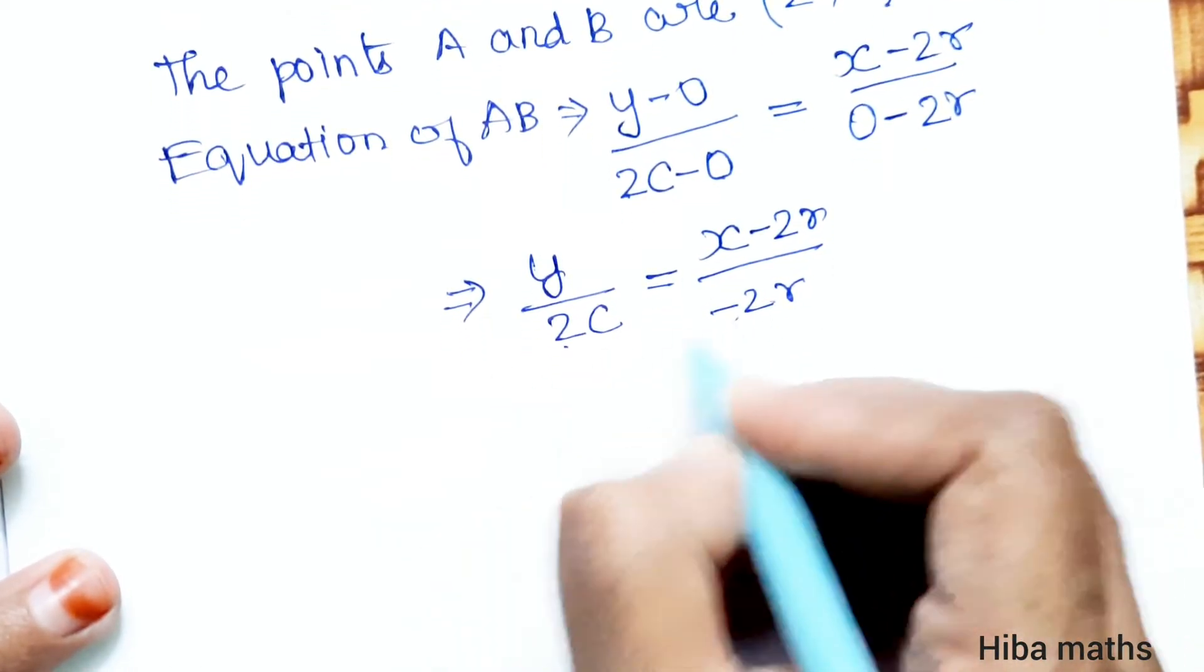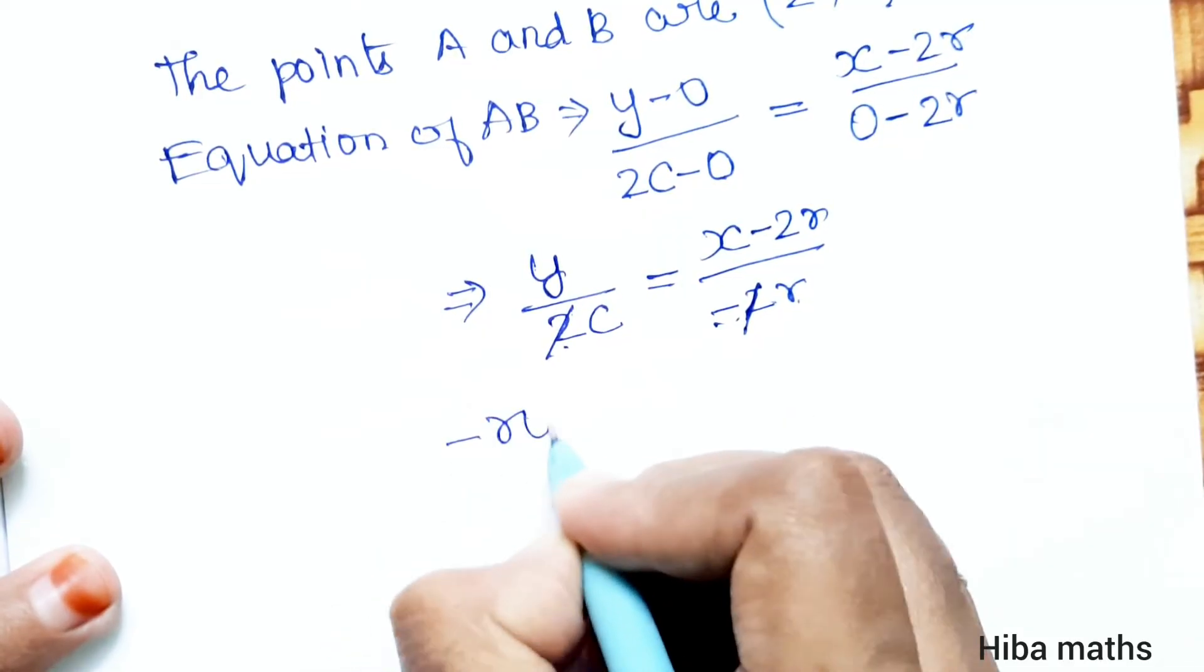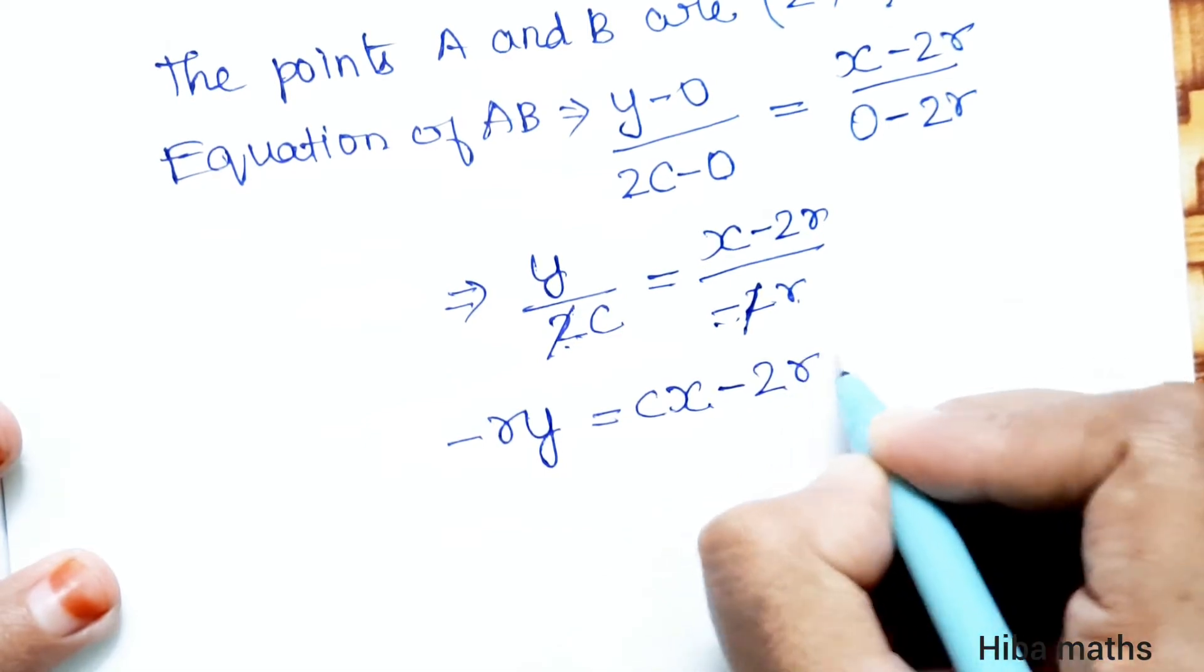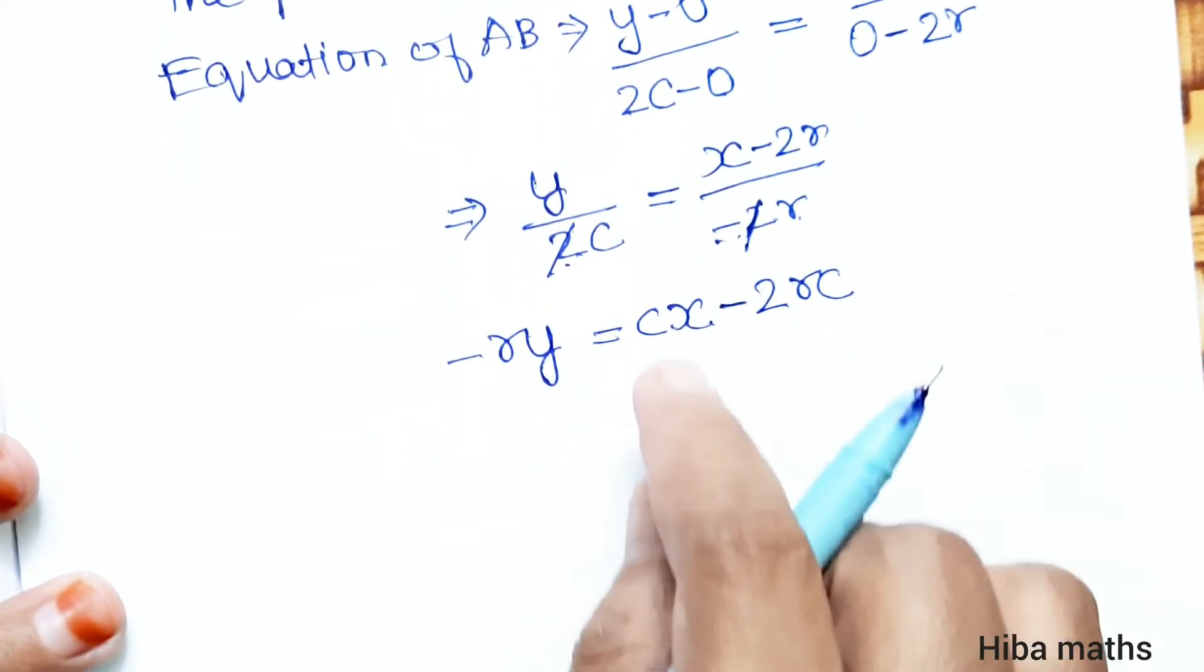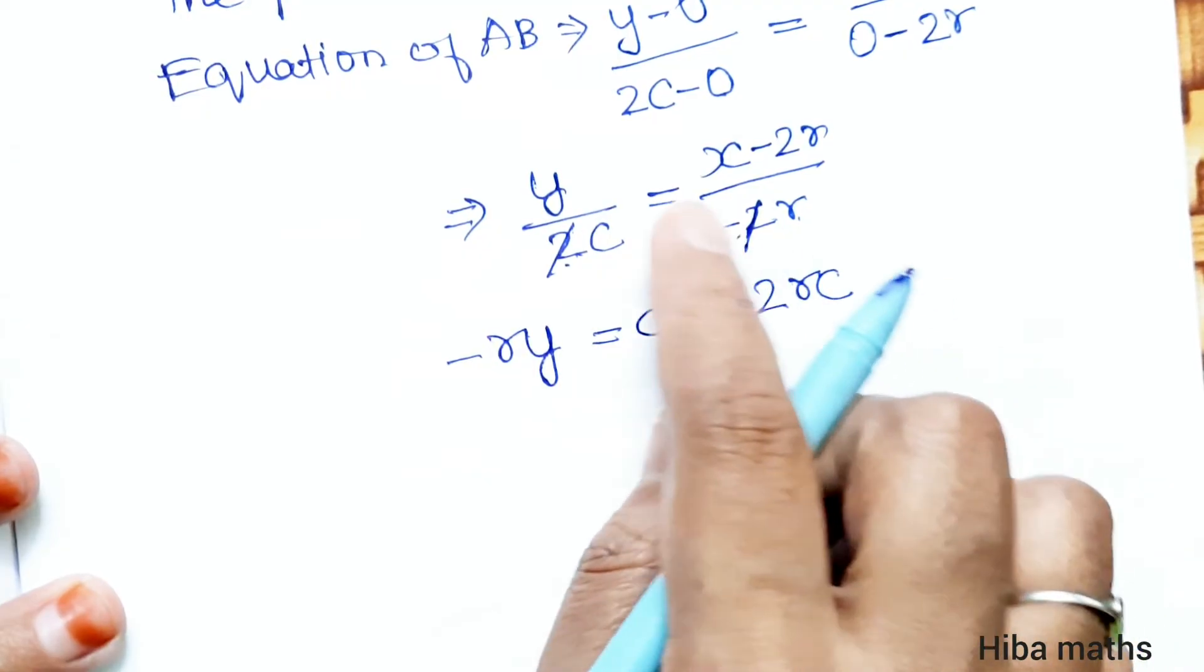The 2s cancel. So we get (y over c) equals (x minus 2r) over (minus r). This simplifies to minus ry equals c times (x minus 2r), which is cx minus 2rc.